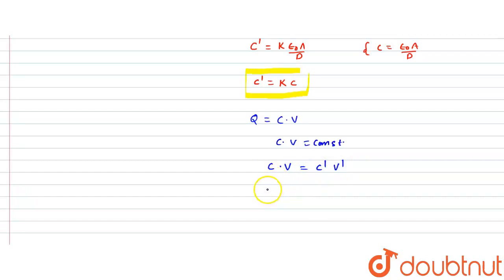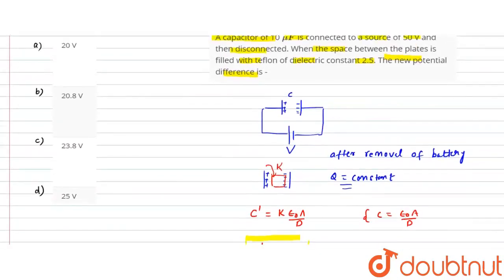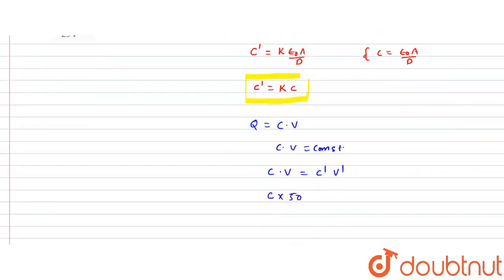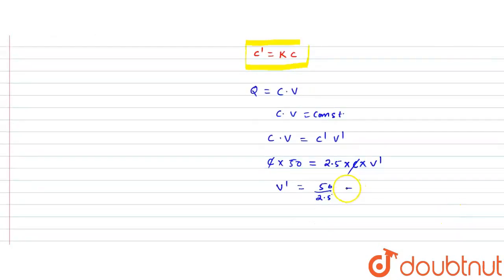Here, we originally assumed the capacitance is C. The voltage given in the problem is 50 volts, and the dielectric constant given is 2.5. So putting in the values: C × 50 = 2.5·C × V'. The C cancels out, so V' = 50 / 2.5.